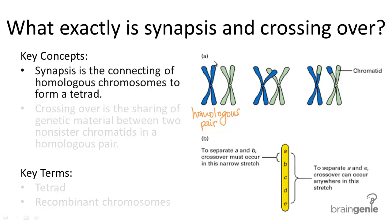Synapsis refers to the connecting of homologous chromosomes together, and this connected pair forms what we call a tetrad. Tetrad meaning four, referring to the four sister chromatids present: one, two, three, and four.